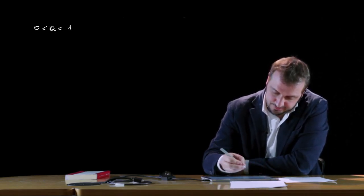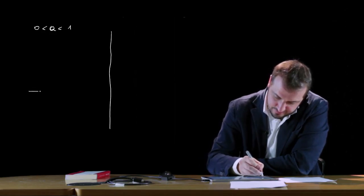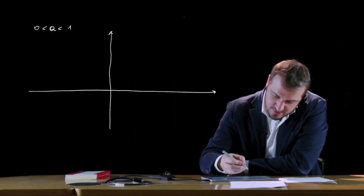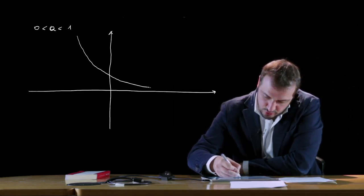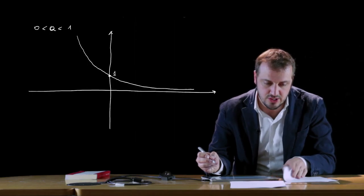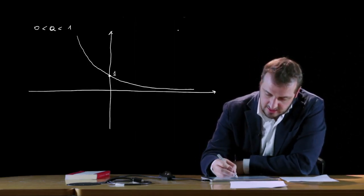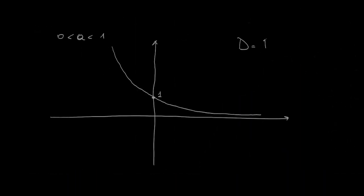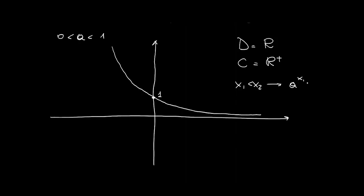Nel caso in cui la base a è compresa fra 0 e 1, il grafico corrisponde a quello di una funzione monotona decrescente, che interseca anch'essa l'asse delle ordinate in corrispondenza di 1. Il dominio è ancora tutto ℝ e il codominio è ℝ+. La funzione monotona decrescente implica che per x1 minore di x2 si ha a^x1 maggiore di a^x2.